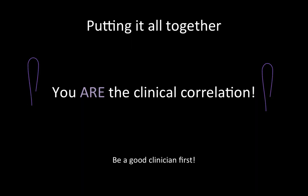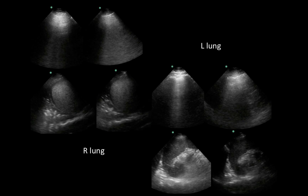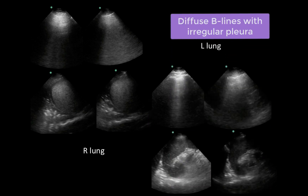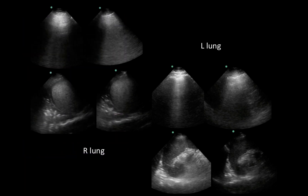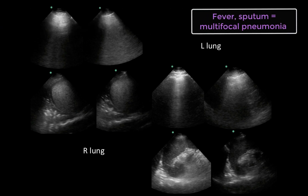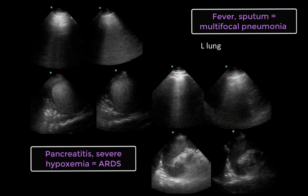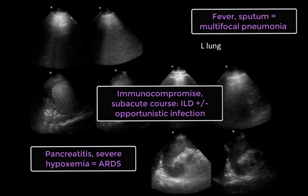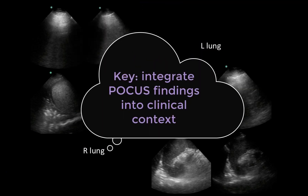Most importantly, it is important to always integrate your POCUS findings into the patient's clinical picture. A lung signature demonstrating diffuse B-lines with an irregular pleural morphology and dependent consolidations with small associated pleural effusions could suggest different pathologies depending on context: multifocal pneumonia in a patient with cough and fever; ARDS in a patient with severe pancreatitis in the ICU and a low P-to-F ratio; or drug-related interstitial lung disease superimposed with atypical or fungal pneumonia in an immunosuppressed patient on methotrexate presenting with two months of shortness of breath.